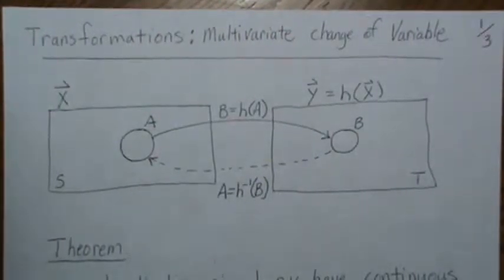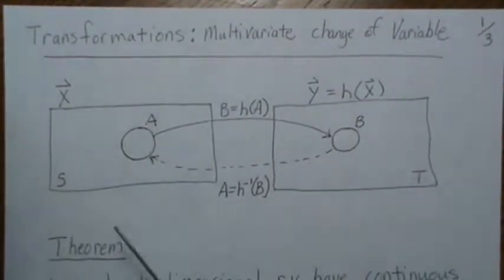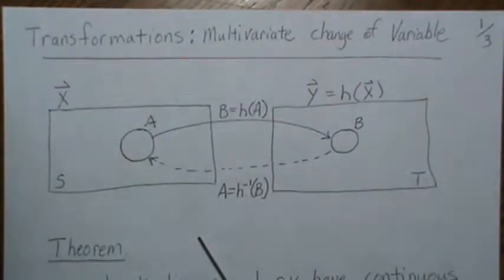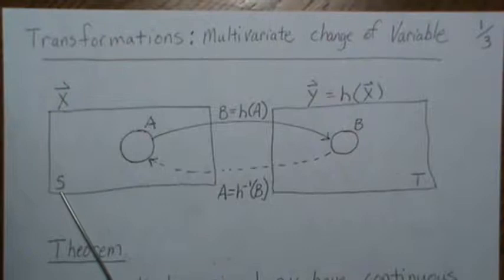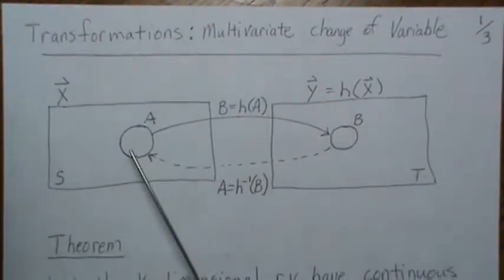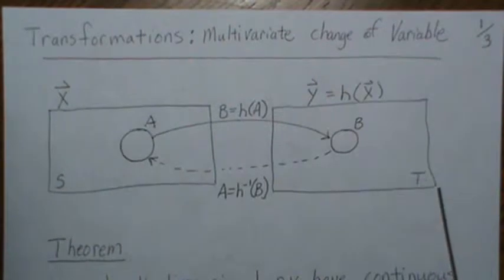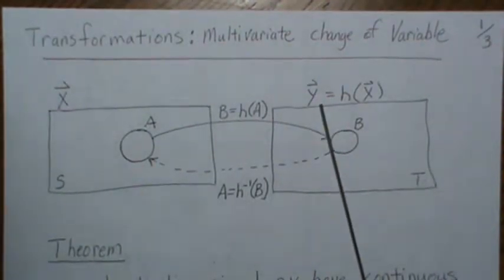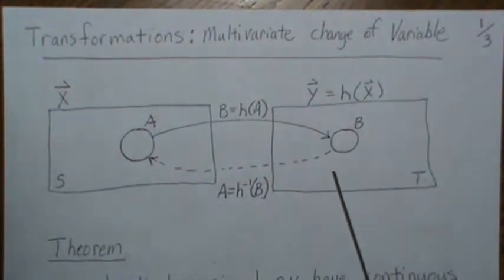Hello, this is the sixth video in a series called Transformations of Random Variables. Here we're going to look at the multivariate change of variable technique. I always like to start with a picture to abstractly illustrate what's going on. We have a random vector x in domain S and a function h that maps sets in S to sets in T, the y-world, as a function h of x.